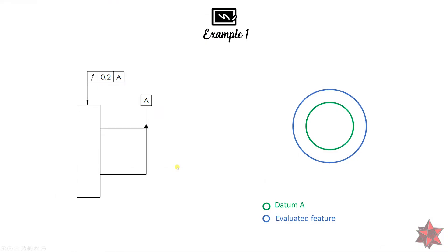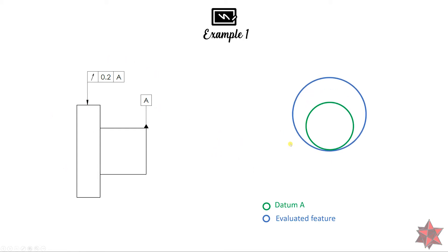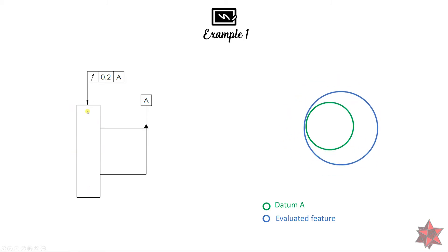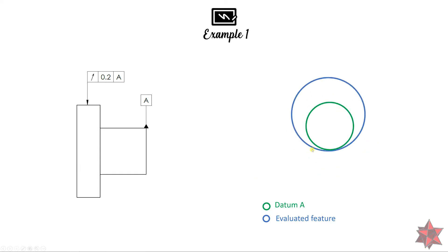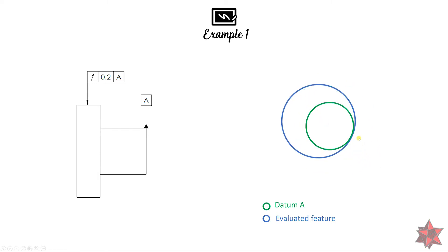The first drawing example shows a part with a requirement of runout of 0.2 millimeters from datum A. This is how we see it on the drawing. Interpreted in an exaggerated way, this component at any cross section is allowed to move from the axis of datum A within a total tolerance zone of 0.2 millimeters.